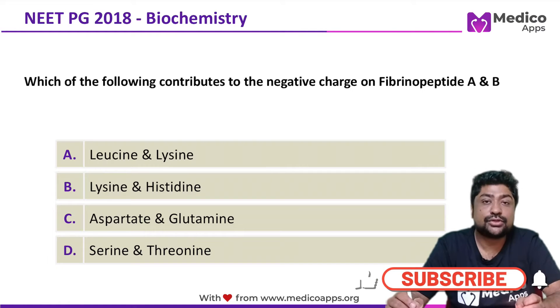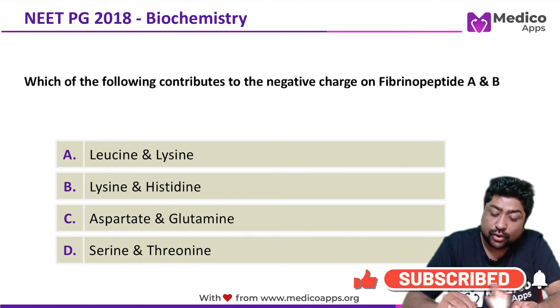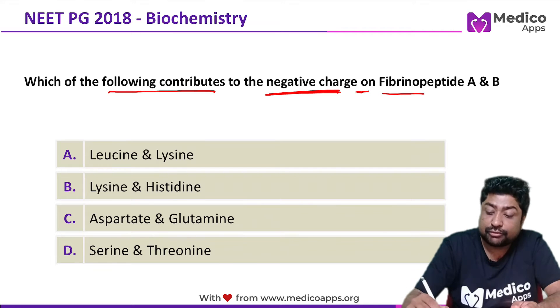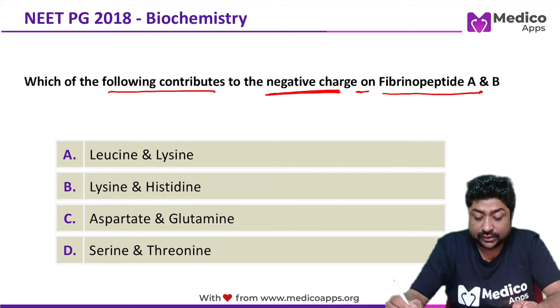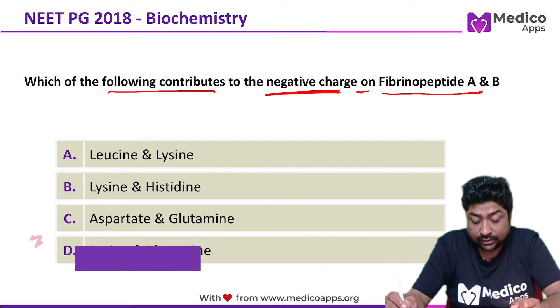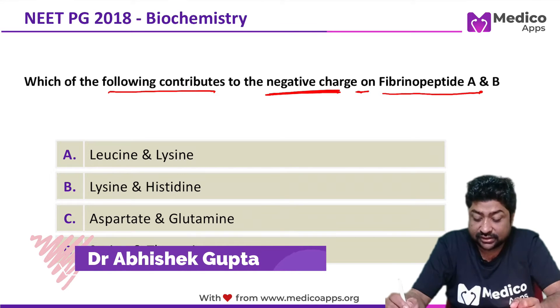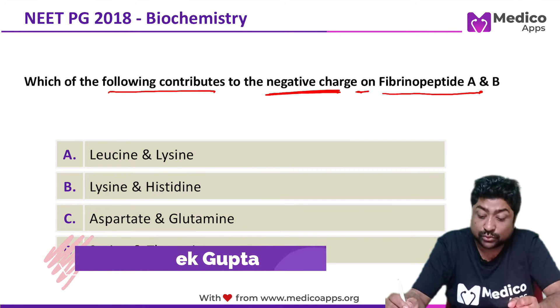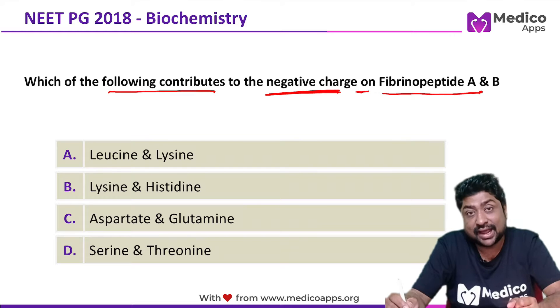This question appeared in NEET PG 2018 and it asks about all of the following that contribute to the negative charge on fibrinopeptide A and B. The options are: A) leucine and lysine, B) lysine and histidine, C) aspartate and glutamide, and D) serine and threonine. We have just launched our NEET PG previous year question bank in book format, available on Amazon — check the description for more.